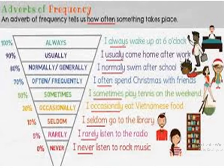What is adverb of frequency? It tells us how often something takes place — how many times a thing is happening. For example: always means 100% of the time — I always wake up at 6 o'clock. Usually means about 90% — I usually come home after work. Usually again is the adverb of frequency.